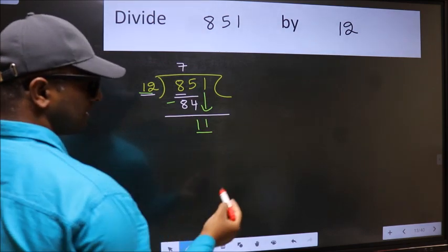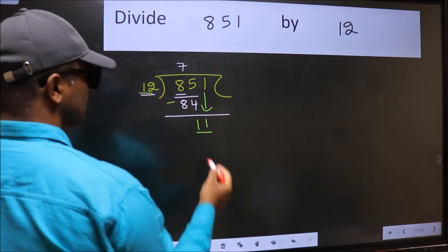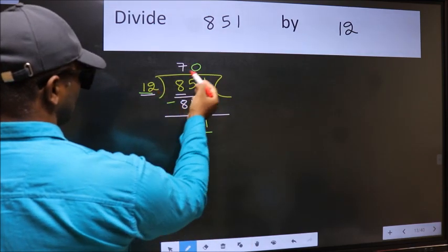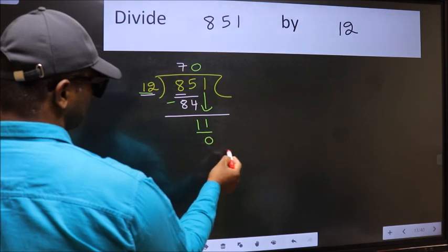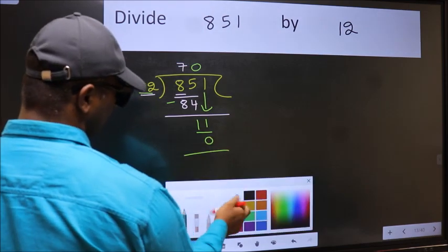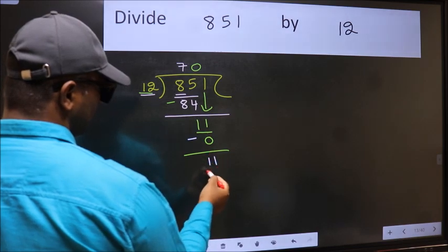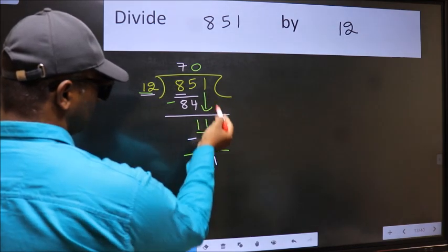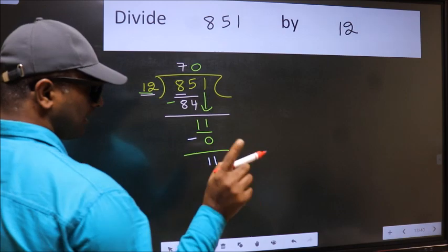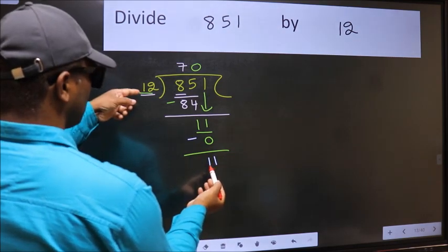we should take 0. So 12 into 0 is 0. Now we should subtract: 11 minus 0 equals 11. Over here, we did not bring any number down, and 11 is smaller than 12, so now we can put a dot and take 0.